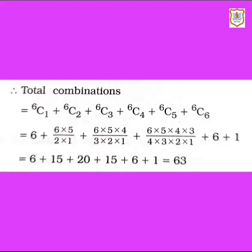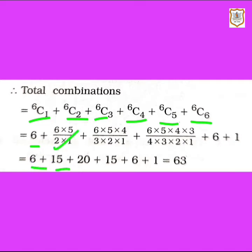So let's solve: 6C1 + 6C2 + 6C3 + 6C4 + 6C5 + 6C6. The value of 6C1 is 6. 6C2 = 6×5 / (2×1) = 15. 6C3 = 6×5×4 / (3×2×1) = 20. 6C4 = 6×5×4×3 / (4×3×2×1) = 15. The value of 6C5 is 6 and the value of 6C6 is 1.